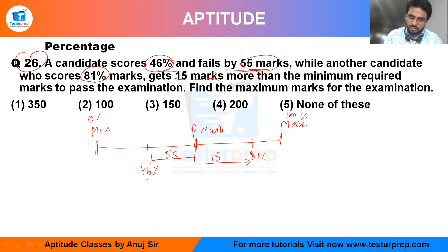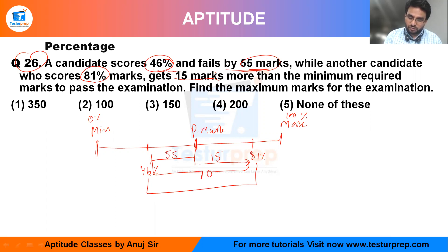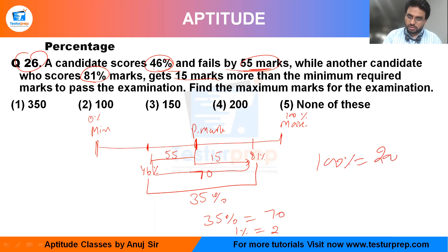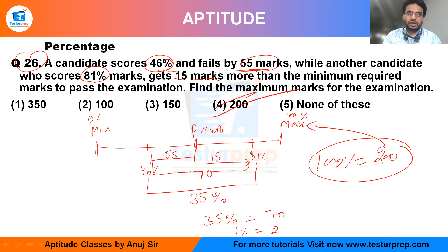So the gap between 81 percent and 46 percent is 35 percent, and the total gap in marks between them is 55 plus 15, which equals 70 marks. Therefore, 35 percent equals 70 marks, so 1 percent equals 2 marks, and 100 percent equals 200 marks total.